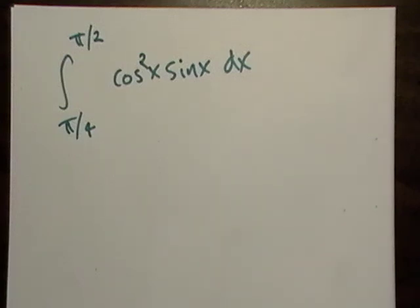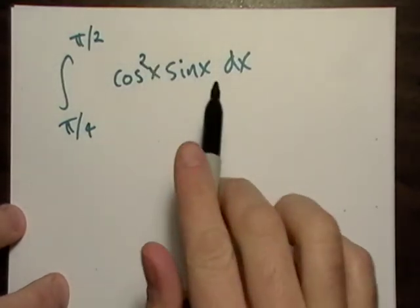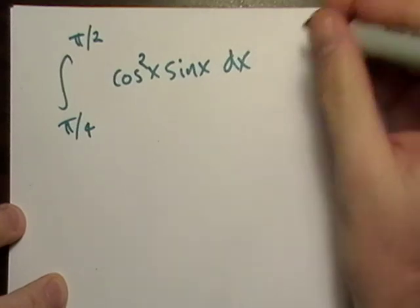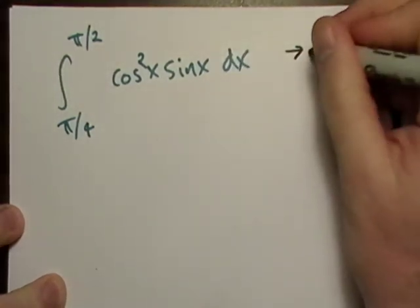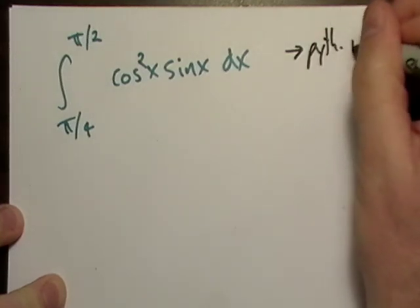Okay, here's my first example, one that we're actually going to really work out. Notice how I've got one odd power and one even power. That means, back from your notes, that I'm probably going to go with the Pythagorean identity.